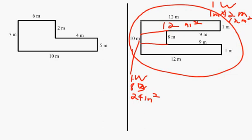Then the last box is a 12 by 1 like the first box. So you still have 12 meters squared.